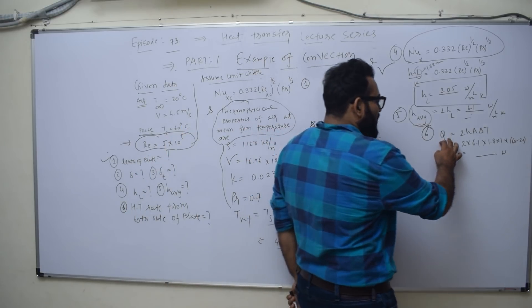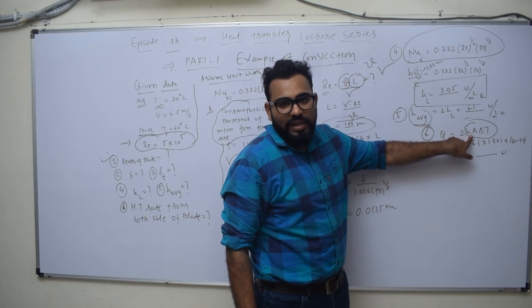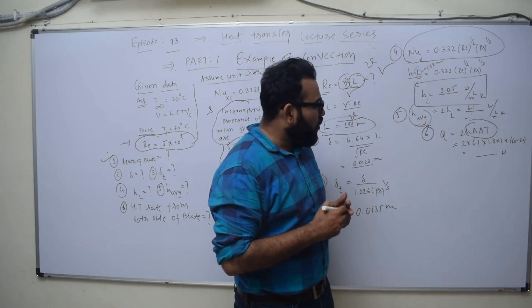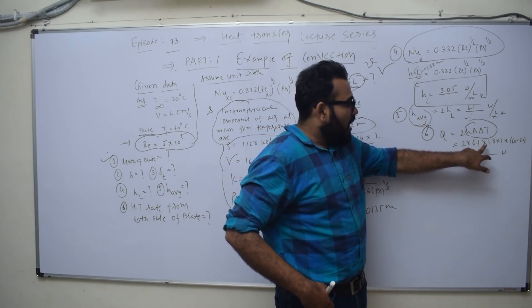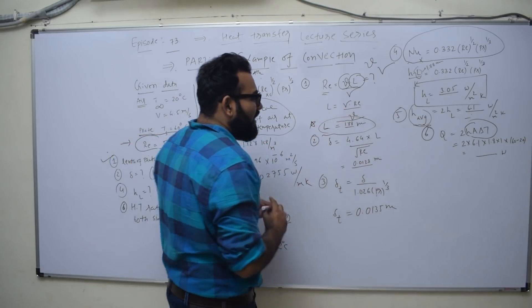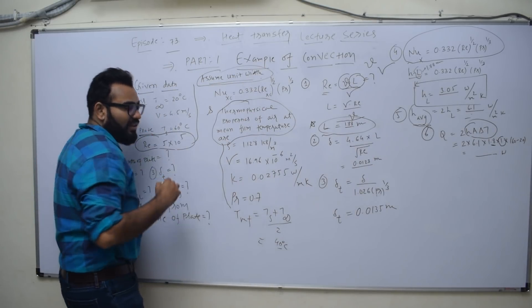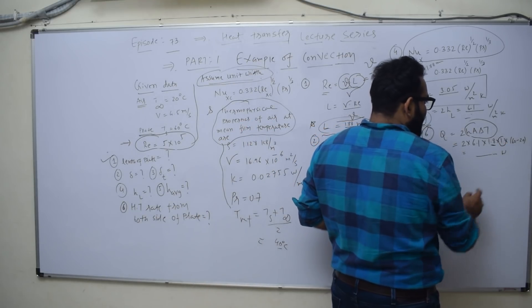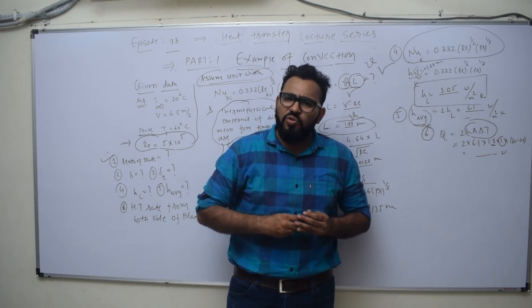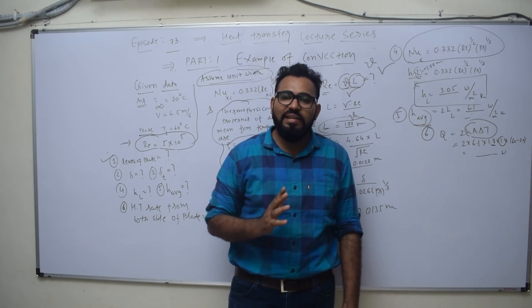Heat transfer from both sides of the plate: generally, Q = h × A × ΔT. For both sides, multiply by 2: Q = 2 × h_avg × A × ΔT. Area = length × width. Width is assumed as unit width = 1. ΔT = surface temperature − fluid temperature = 60 − 20 = 40°C. Solve this to get your answer. That's how you solve it systematically. I hope you liked the lecture. Please like, share, and have a nice day.